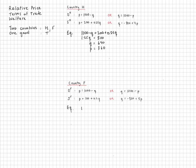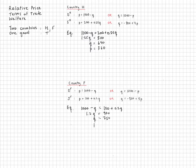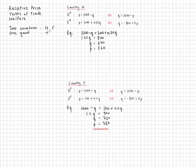For country F, I set the same inverse demand function equal to their different supply function and solve for quantity. 900 divided by 1.2 gives 750, and plugging that in gives a relative price of 250. So the relative prices differ because the supply functions differ. The foreign country, producing at a lower relative price, will be the exporter of good T, while the home country, with its higher price, will be the importer.